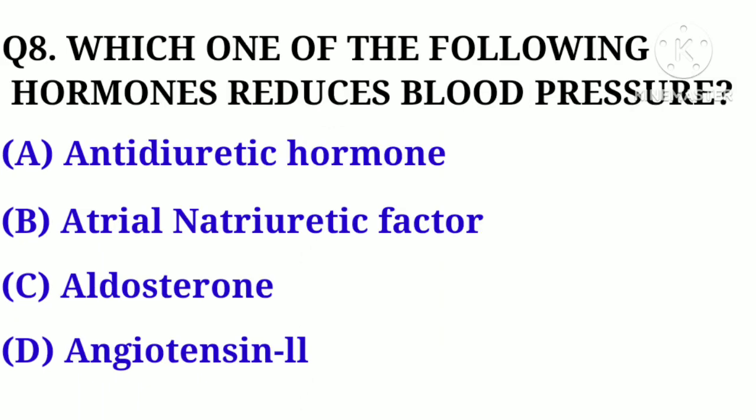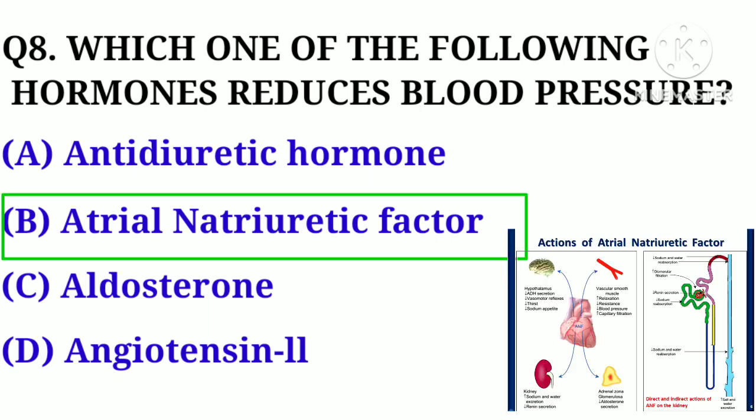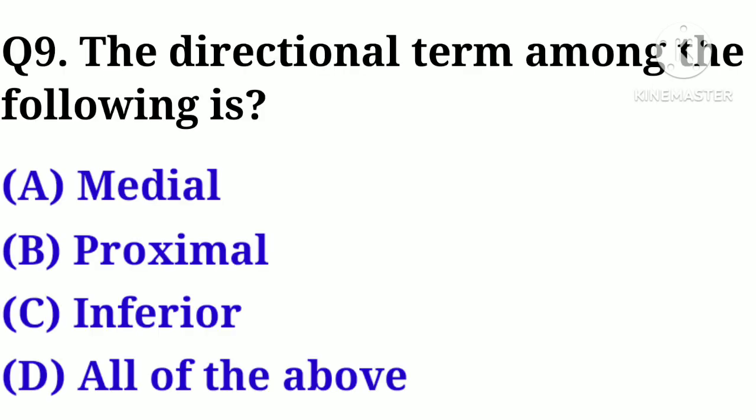Question number 8. Which one of the following hormones reduces blood pressure? Option A. Antidiuretic hormone, B. Atrial natriuretic factor, C. Aldosterone, D. Angiotensin II. Correct answer: Option B. Atrial natriuretic factor.